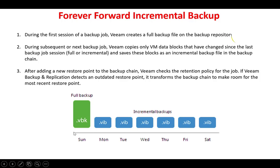Here we have the concept of a retention cycle. The retention cycle tells us how many days we keep our backups in our repository or storage. One common methodology keeps backups for one week — seven days. After seven days, the oldest backup is discarded. For example, if we take a backup again on Sunday, the last Sunday backup will be discarded from our backup repository. After adding a restore point to the backup chain, Veeam checks the retention policy and discards the oldest backup accordingly.